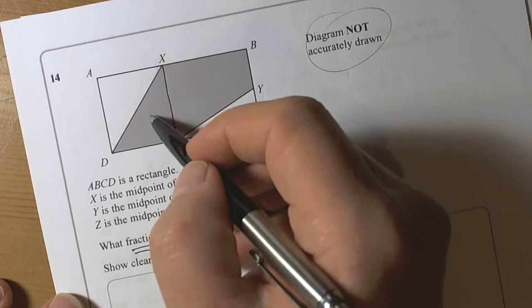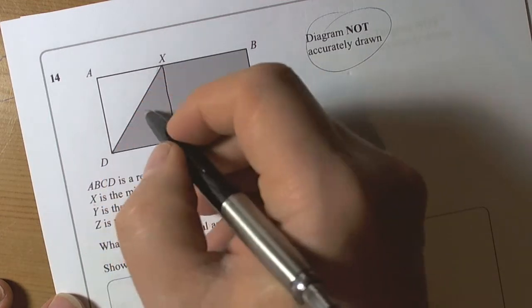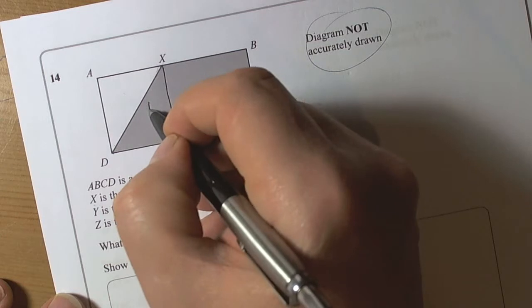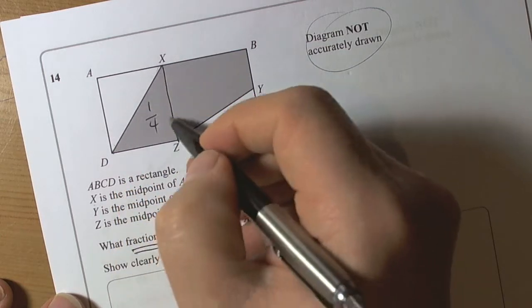And therefore this has to be a half of that shape, that's the whole thing, so therefore this part here is a quarter. So this part here is a quarter of the shape.